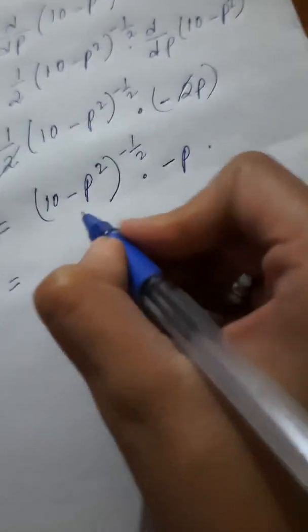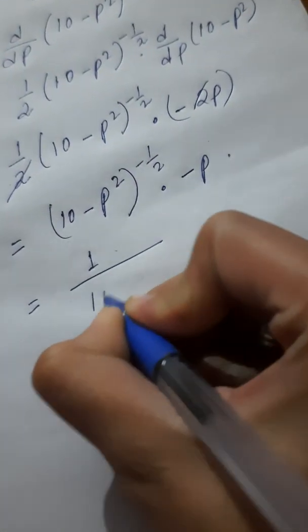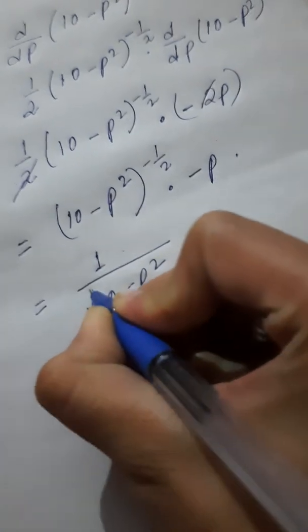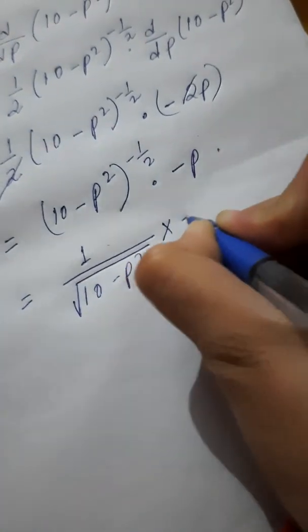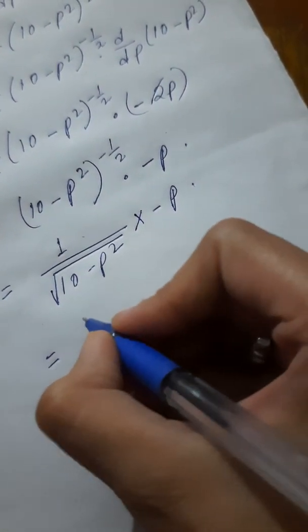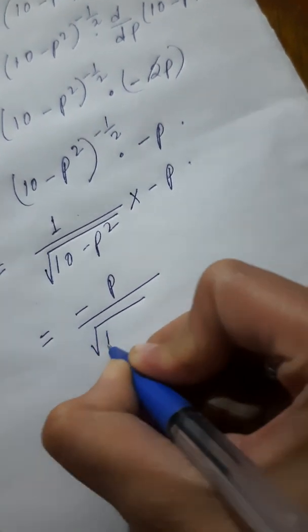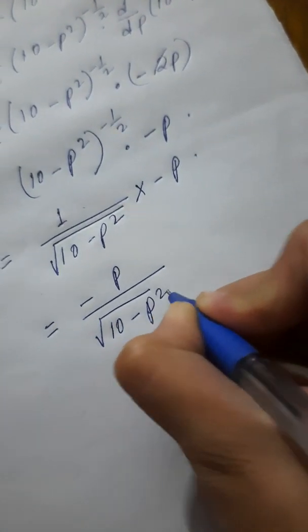Now, instead of minus half power, we can write it as 1 by root 10 minus p squared times minus p, or minus p by root 10 minus p squared.